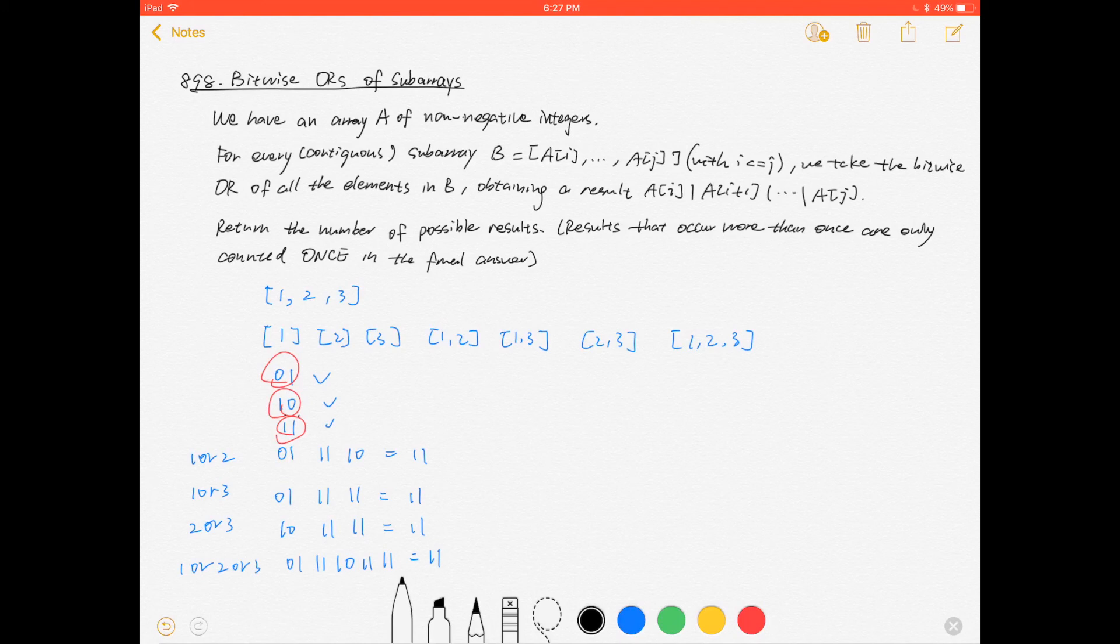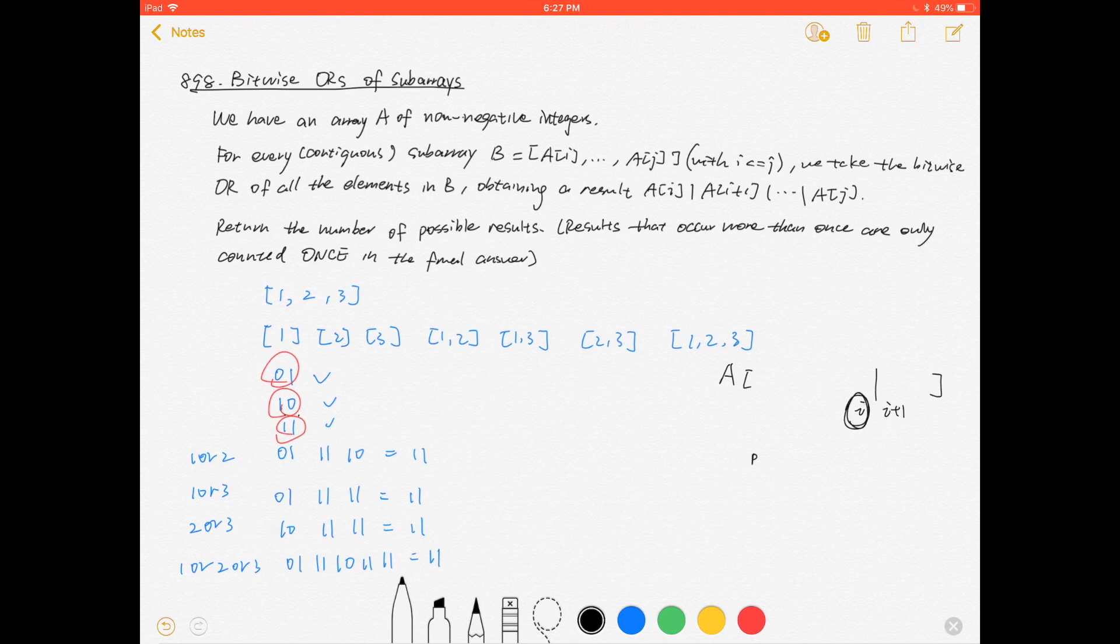If we have an array element at position i, this is i's position, this is i+1's position. For i's position, we have this bitwise result...